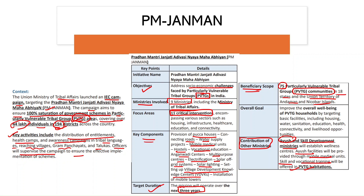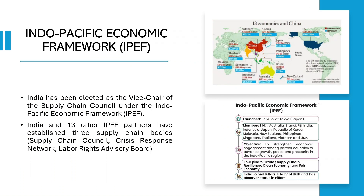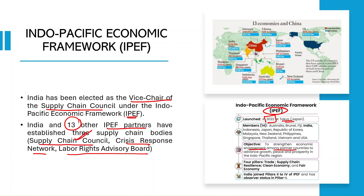Moving to international relations: India has been elected as the Vice Chair of the Supply Chain Council under the IPEF — Indo-Pacific Economic Framework. India, along with 13 other IPEF partners (14 total), has established three supply chain bodies: the Supply Chain Council (the apex body), the Crisis Response Network, and the Labor Rights Advisory Board. IPEF was launched in 2022 at Tokyo, Japan, to promote economic engagement among partner countries in the Indo-Pacific region and ensure peace and prosperity there.